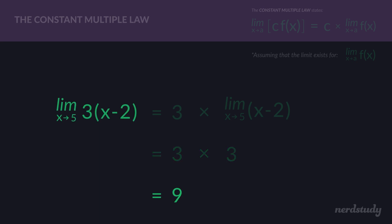The limit as x approaches 5 for 3 times x minus 2 — if somebody gave you y equals 3 times x minus 2 and asked what the limit is as x approaches 5, you wouldn't even have to chart it out. Just by using the constant multiple law, you would know right away that this indeed has a limit of 9.